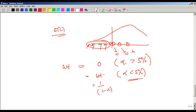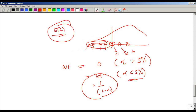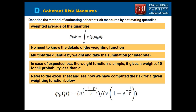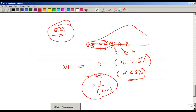However, it assigns a heavy weight when the value is less than 5%. The weight is given by 1 minus 1 divided by alpha. So it gives a weight of zero for all probabilities greater than alpha, and non-zero weight below that threshold.